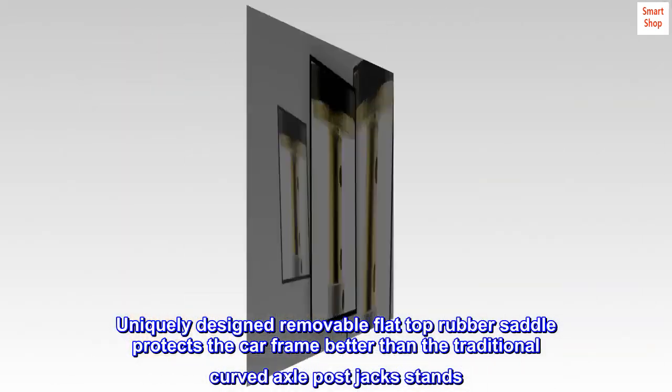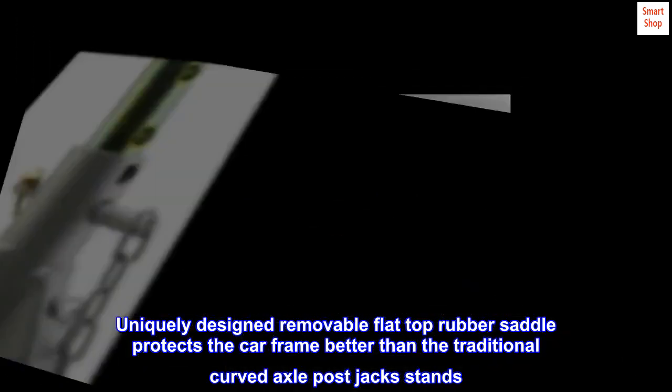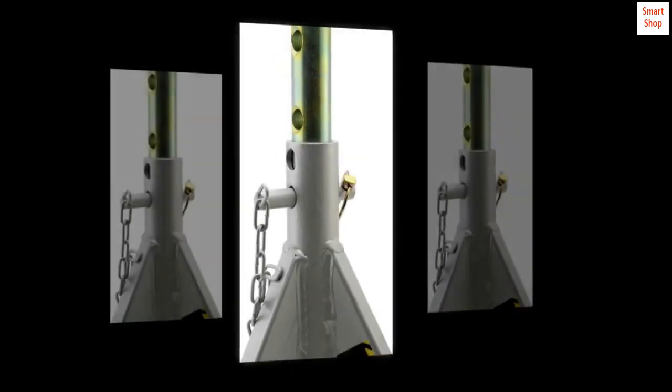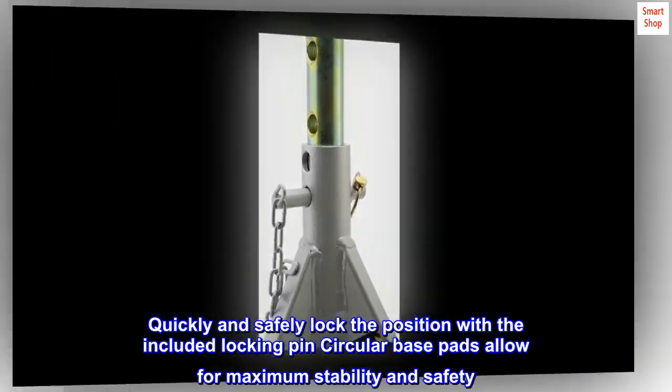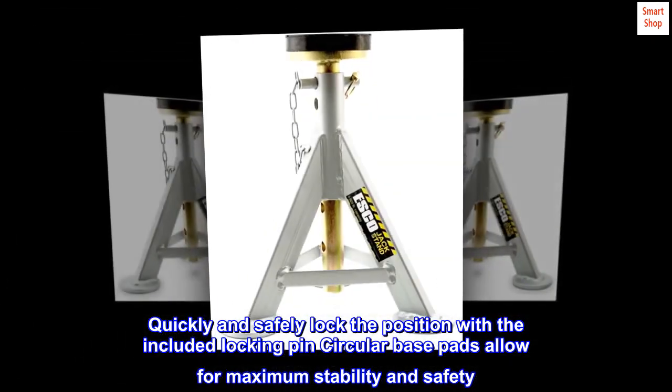Uniquely designed removable flat top rubber saddle protects the car frame better than traditional curved axle post jack stands. Quickly and safely lock the position with the included locking pin. Circular base pads allow for maximum stability and safety.